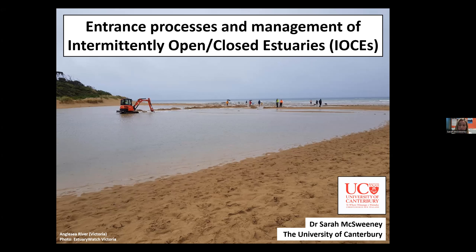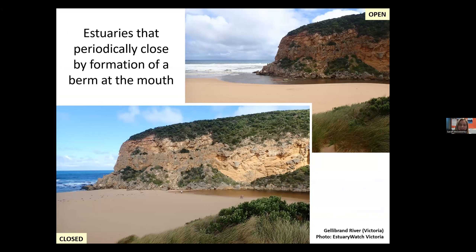In particular, I'm trying to look at the factors that cause estuaries to close off really quickly after they've been artificially opened, and try to use that information to avoid that. Just as a brief intro: intermittently open and closed estuaries go by lots of different acronyms globally, but essentially they're any estuary that has periodic entrance closure. This site here is the Jolly Run River estuary in Western Victoria — one that's really spectacular and that I've spent quite a bit of time doing fieldwork at. You can see it's closed on the bottom because there's a berm formed across the mouth, and on the top picture it's open. These estuaries undergo seasonal or even more regular cycles of opening and closure.